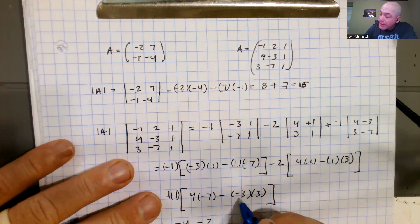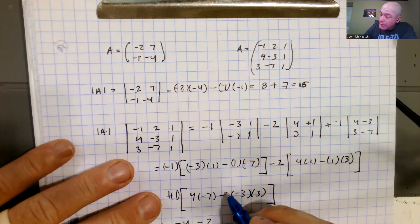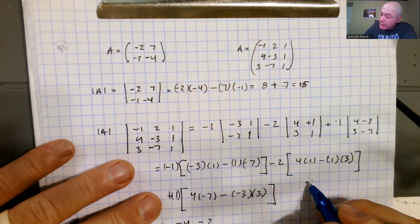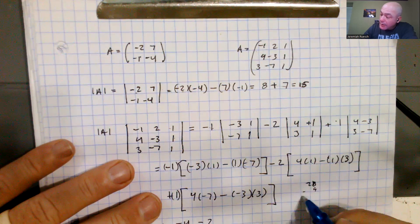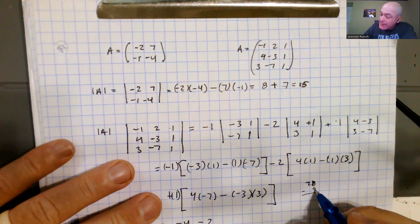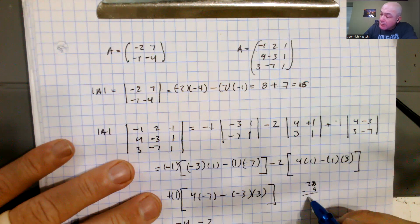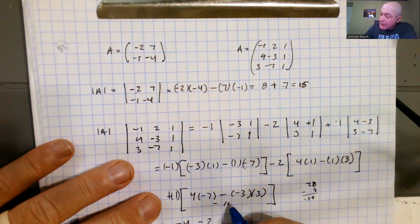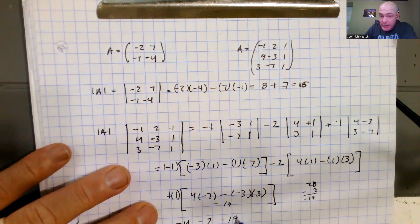we have negative 28, and this becomes a plus 9, so negative 28 plus 9, so 28 minus 9, that makes that 10, that would be 18, plus one more is 19. So this becomes a negative 19, and that's minus 19.